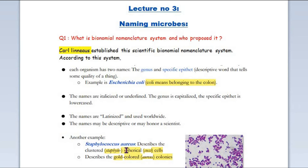For example, Staphylococcus aureus: 'staphylo' means spherical, 'coccus' means gel-like cluster, and 'aureus' means gold. So the Latin words can be broken down to understand their meaning.